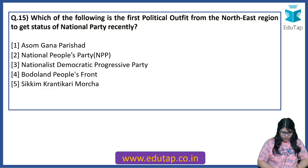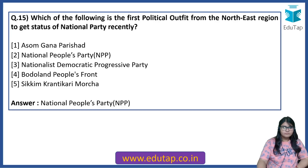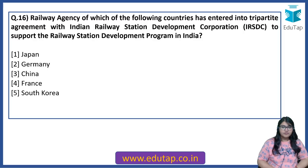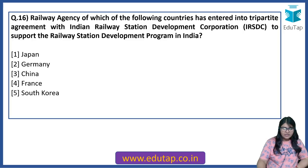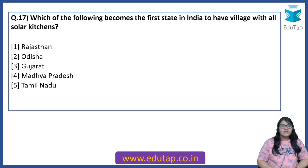Which of the following is the first political outfit from the North Eastern region to get the status of National Party recently? The answer is National People's Party (NPP). Railway agency of which of the following countries has entered into a tripartite agreement with the Indian Railway Station Development Corporation to support the railway station development program in India? The answer is France.